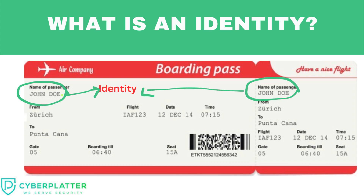Just like how people are recognized by their names, roll numbers, or employee numbers, a digital identity represents you online. Let's say you have booked a flight and you arrived at the airport.